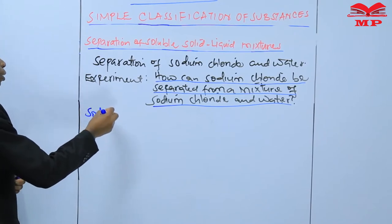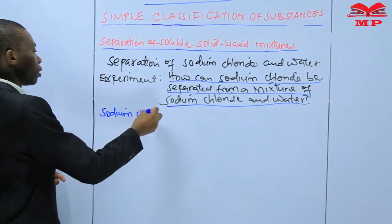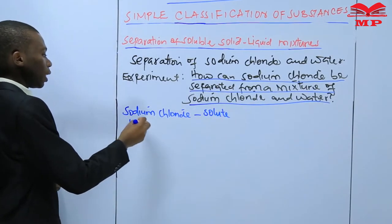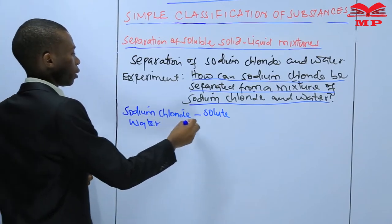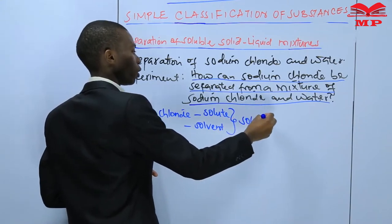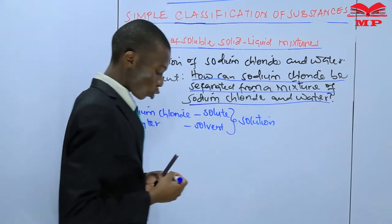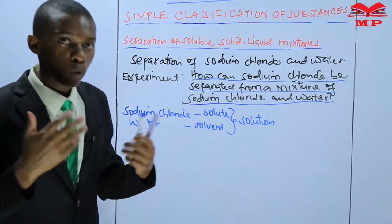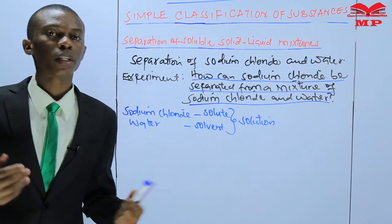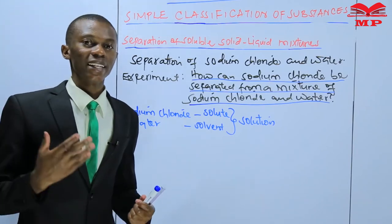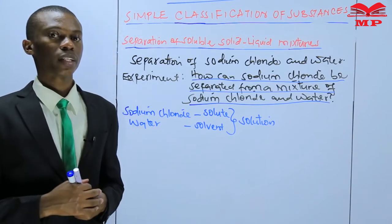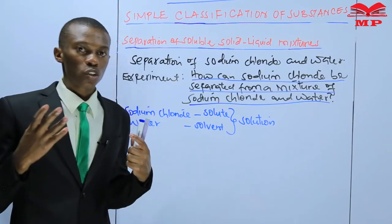Sodium chloride is the solute. Water is the solvent, and the mixture of these two forms a solution. This solution is homogeneous, and homogeneous means that the solute and the solvent particles are uniformly distributed throughout the solution.